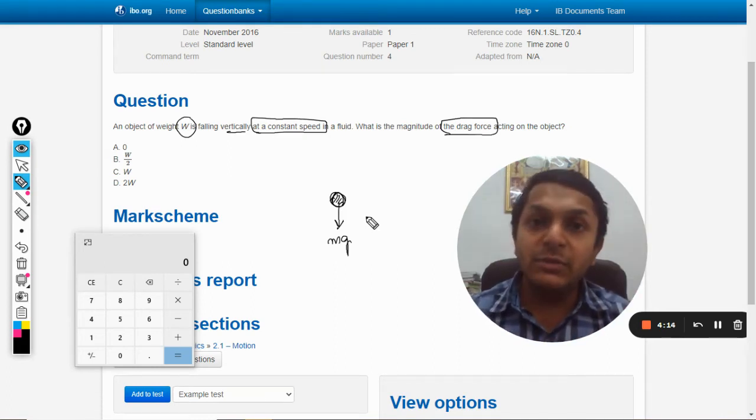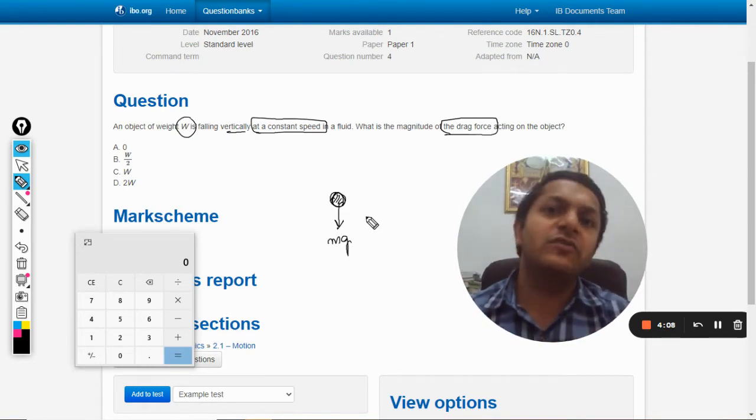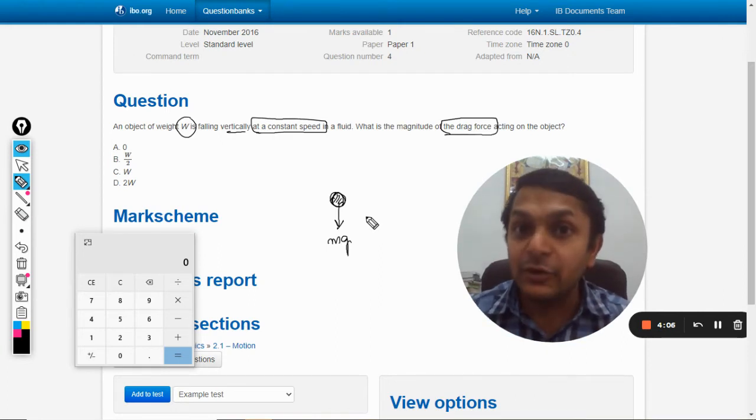It only means, because of Newton, that the net force should be equal to zero. The net force should be equal to zero. It only means that weight is acting downwards and there is a drag force which is acting in the upward direction.